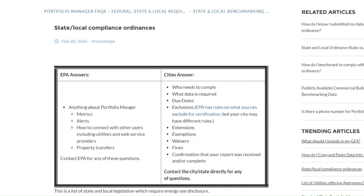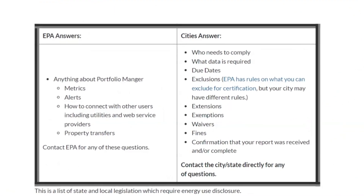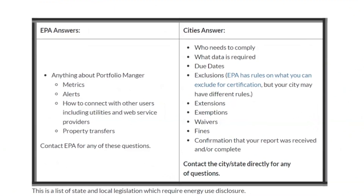If you are required to benchmark your building to comply with a state or local ordinance, the EPA can help you with questions related to the proper use and functioning of the Portfolio Manager tool. However, any questions about state or local ordinances, including those related to deadlines, required data, extensions, exemptions, confirmation of receipt, and/or fines for noncompliance, should be directed to your state or local jurisdiction. You can find the link to a summary of state and local benchmarking ordinance contacts in the description of this video.